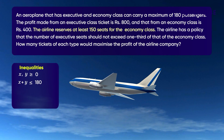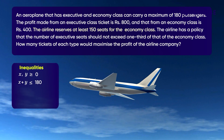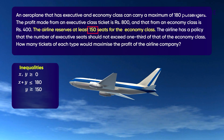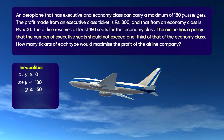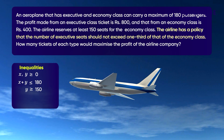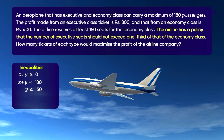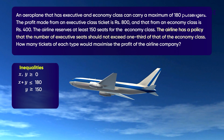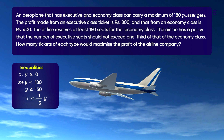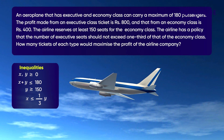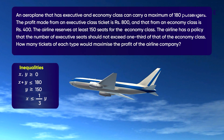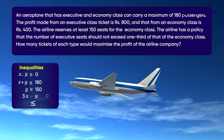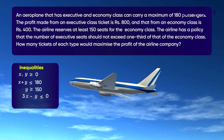Since the airline reserves at least 150 seats for the economy class, Y is greater than or equal to 150. As per the airline's policy, the number of executive seats should not exceed one third of that of the economy class — that is, X should be less than or equal to one third of Y. This inequality can be simplified as 3X minus Y is less than or equal to zero.